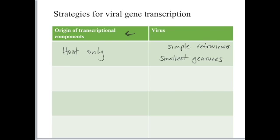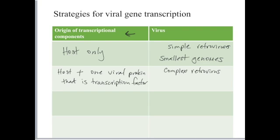The second strategy is to use mostly host proteins, plus one viral protein that is going to regulate transcription and act as a transcription factor. Prime examples of this strategy are complex retroviruses, like HIV, papillomaviruses, like HPV, human papillomavirus, and those very small parvoviruses that we've spoken about before.